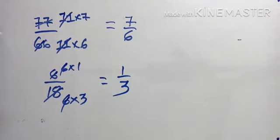So this is how we can convert the given fraction into its reduced form, understood? Thank you.